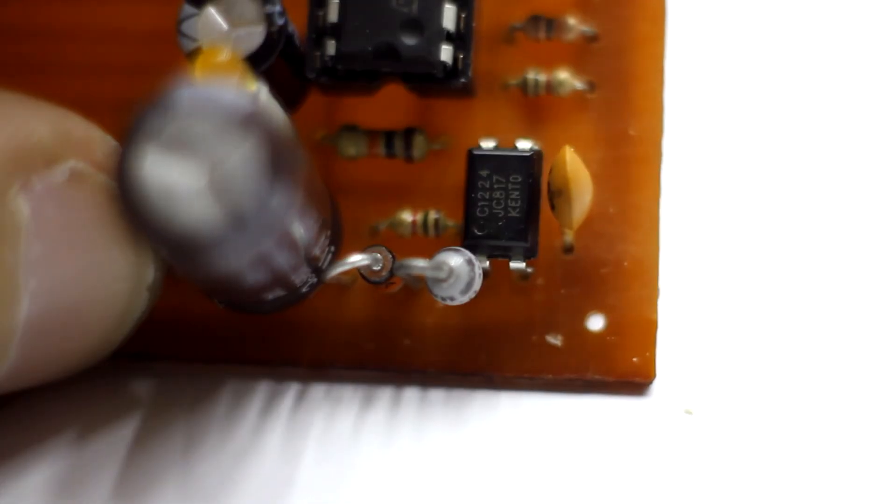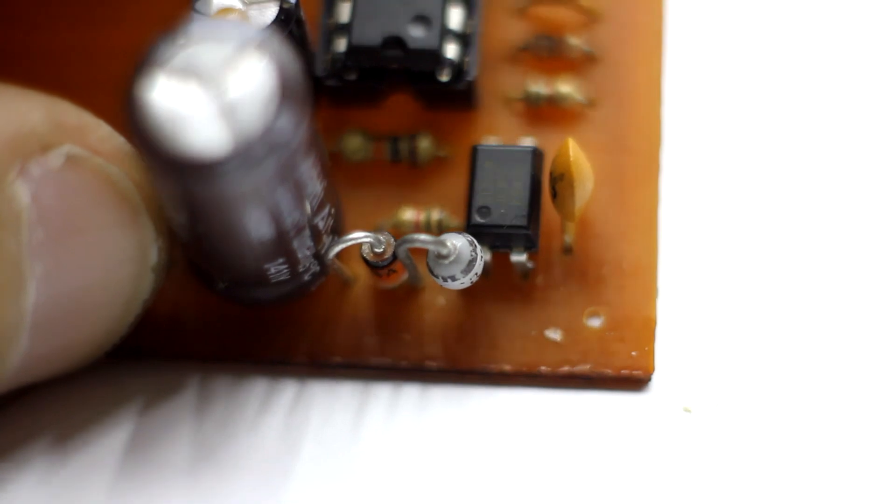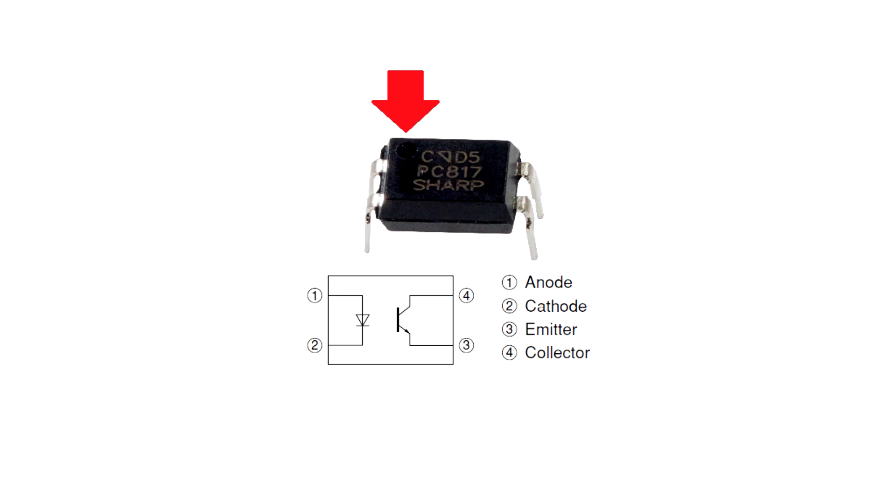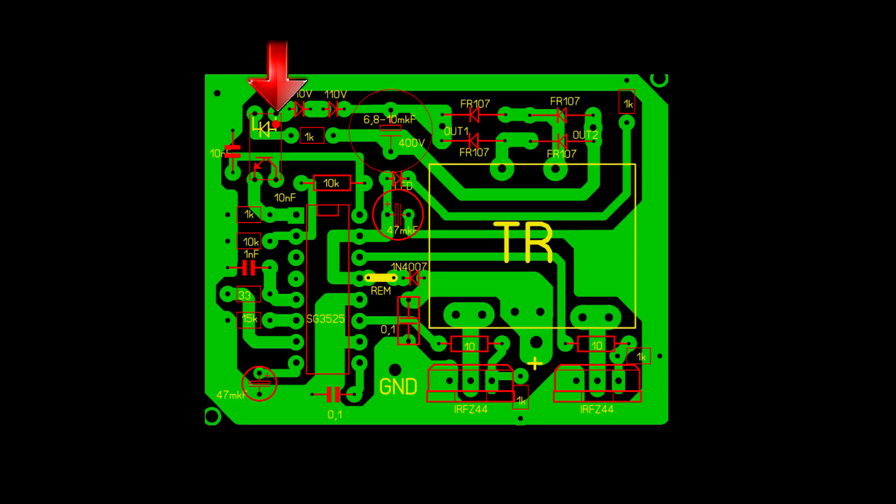Optocoupler is any, in my case taken from the computer power supply. On the body of such optocouplers there is a dot key. It is also marked on PCB, so that even beginners will not confuse the connection.